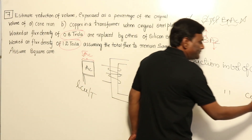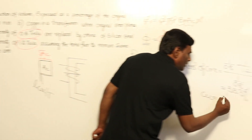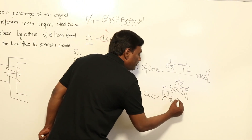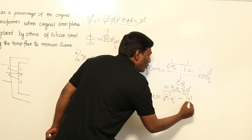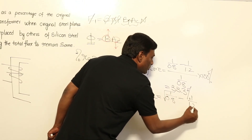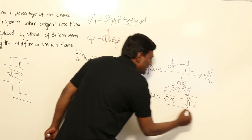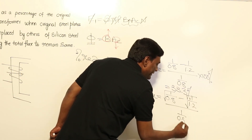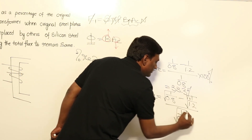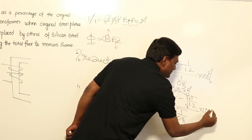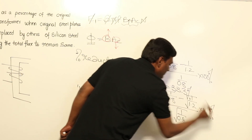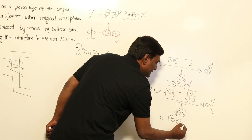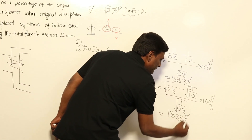So the percentage reduction in volume of copper is going to be: (√(1/0.8) − √(1/1.2)) / √(1/0.8) × 100%, which gives 18.35%.